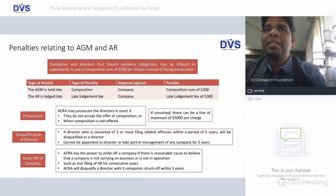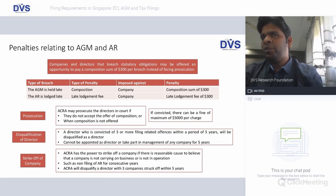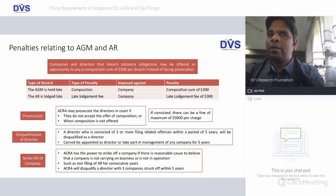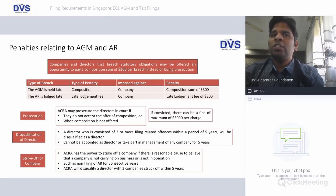All delays and extensions attract penalties. Companies and directors in breach of statutory regulations and obligations may be offered the opportunity to pay a composition sum of S$300 per breach instead of facing prosecution. Types of breach include: AGM held late — a composition penalty of S$300 is imposed against the company; and if the AR is lodged late, a late lodgement fee of S$300 is also payable by the company.